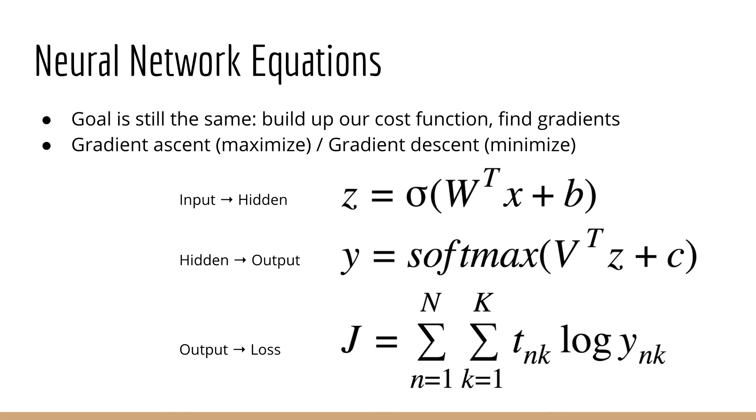y is just the softmax of v transpose z plus c. Note that I've dropped any subscripts from x, y, and z for clarity, but you can assume that they all have two indices, one for the sample index and one for the feature dimension.